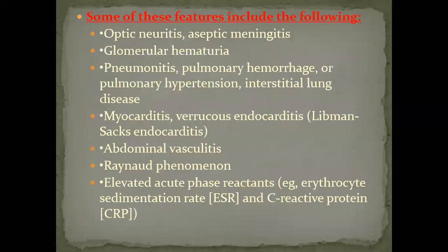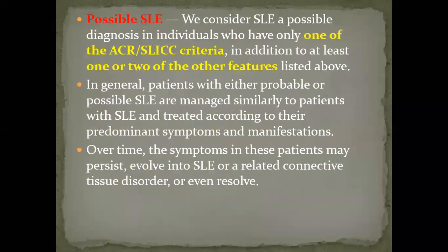Other features commonly encountered with lupus patients include: optic neuritis, aseptic meningitis, glomerular hematuria, pneumonitis, pulmonary hemorrhage or hypertension, interstitial lung disease, myocarditis, verrucous endocarditis, abdominal vasculitis, Raynaud's phenomena, or acute elevation of acute phase reactants. Possible lupus is when only one ACR or SLIC criterion is met plus one or two of these other features — essentially a signal to find another diagnosis.